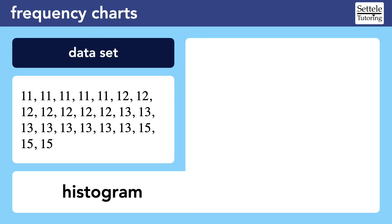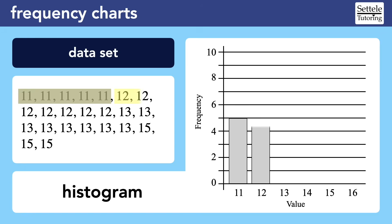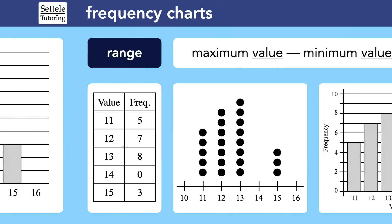A histogram is very similar to a dot plot, but we now have an x-axis with the values and a y-axis that shows the frequencies. Since the number 11 appears 5 times, we draw a rectangle at 11 that goes up to 5 on the y-axis. We also draw rectangles to show that 12 appears 7 times, 13 appears 8 times, and 15 appears 3 times. Now let's look at how to calculate the mean, median, mode, and range for each of these chart types.